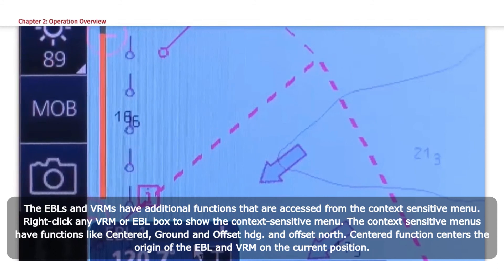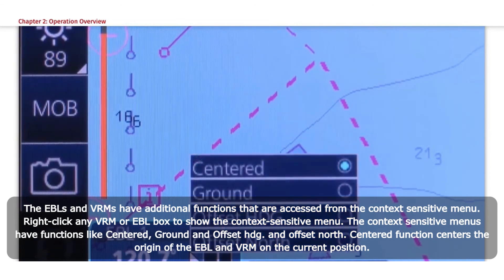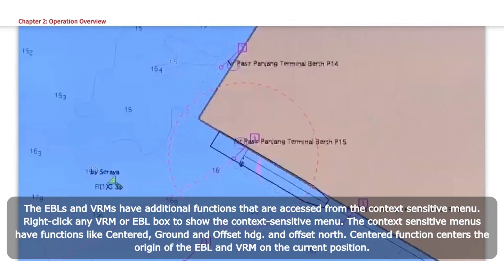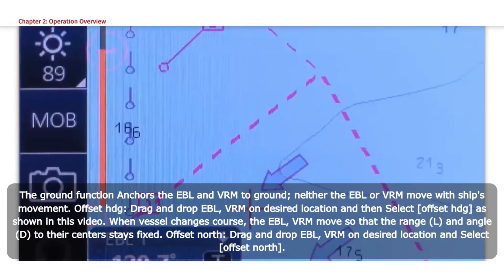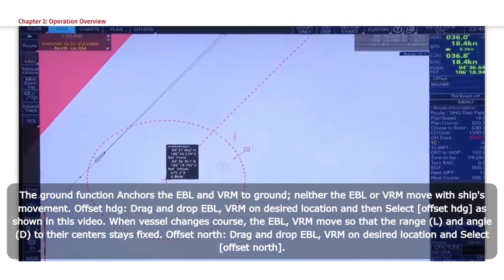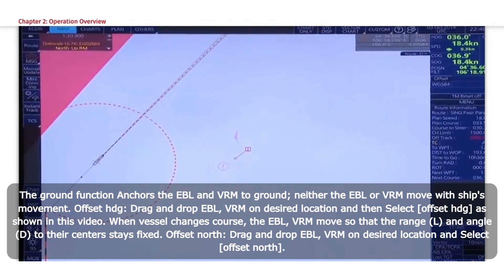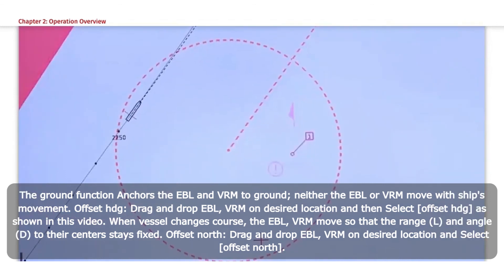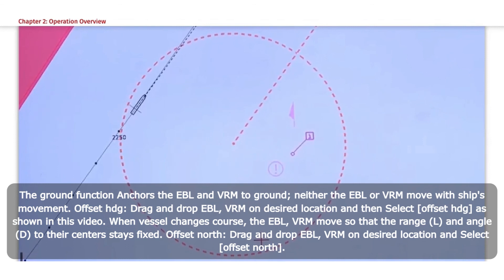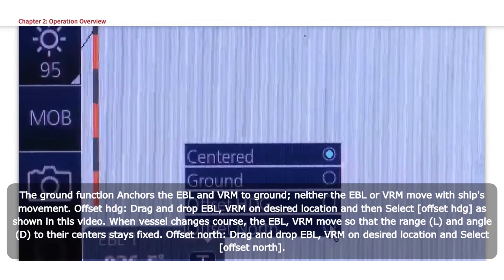The EBLs and VRMs have additional functions accessed from the context-sensitive menu. Right-click any VRM or EBL box to show the context-sensitive menu. The menu has functions like Centered, Ground, Offset HDG, and Offset North. Centered centers the origin of the EBL and VRM on the current position. The Ground function anchors the EBL and VRM to ground; neither moves with the ship's movement. Offset HDG: drag and drop EBL/VRM on desired location and select Offset HDG. When the vessel changes course, the EBL and VRM move so that the range and angle to their centers stays fixed. Offset North: drag and drop EBL/VRM on desired location and select Offset North.